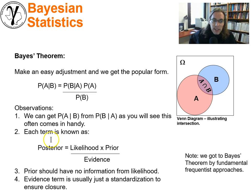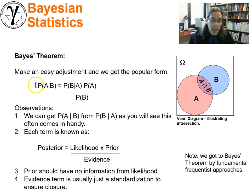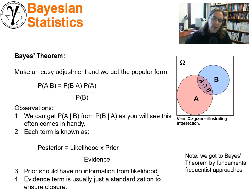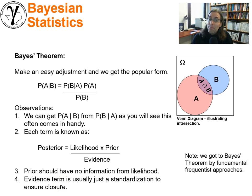We often label these terms. The probability of A is the prior. Probability of B given A is the likelihood. Probability of B is the evidence term. And the probability of A given B is the posterior. The prior should have no information from the likelihood — we can't use information from the data we're updating with to inform the prior. That's double dipping, and what will happen is we will prematurely shrink the uncertainty unfairly. The evidence term is usually just a standardization to ensure closure, but in many cases it's a tricky part of getting the job done.